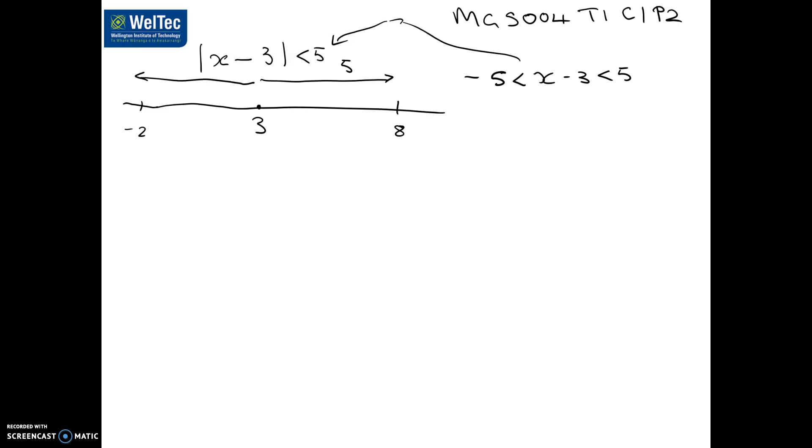We could rearrange that, saying negative 2 is less than x, which is less than 8. We've added 3 to each bit. We've added 3 here, and we've added 3 there, just to tidy it up. So now it matches what we've got on the diagram.